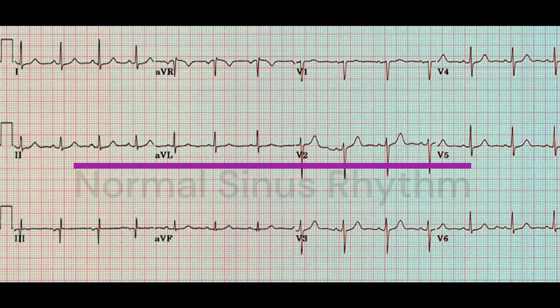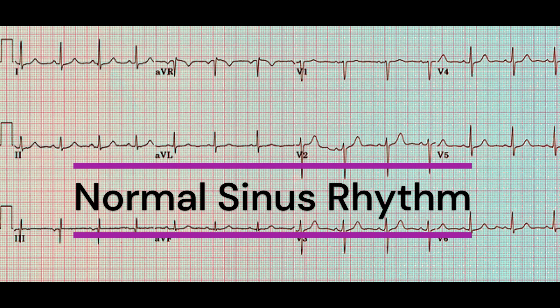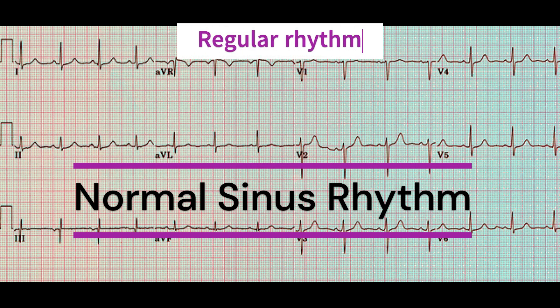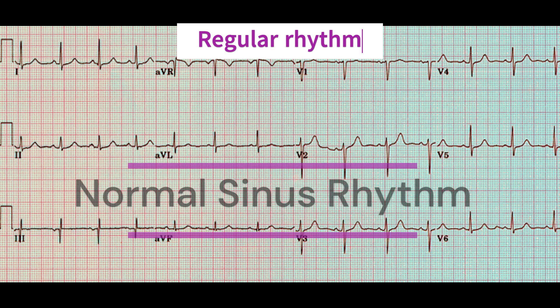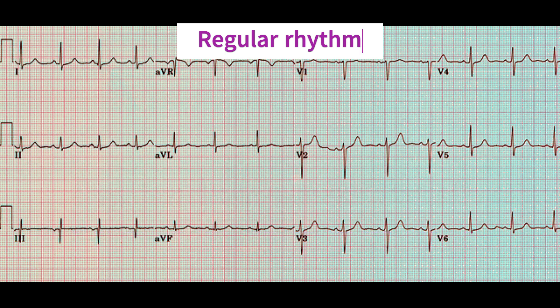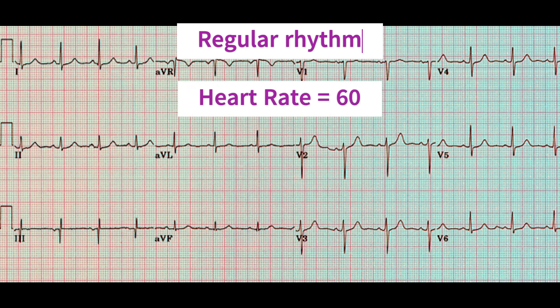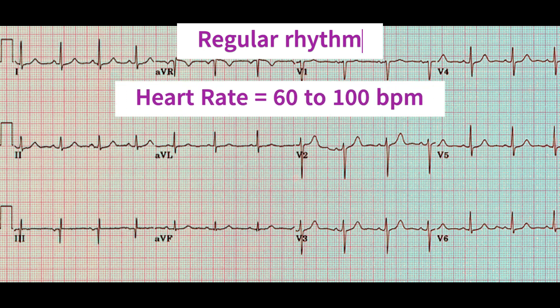In a normal EKG, there is a regular pattern of P-waves, QRS complexes, and T-waves. The heart rate would be between 60 to 100 beats per minute.